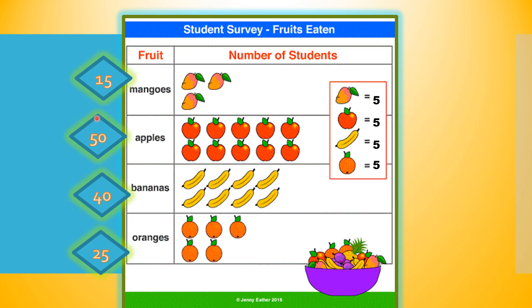Which group of fruits is liked second best by this group of students? We know that 50 is the greatest number, so now we are considering which group has the second biggest number — the number that would come second if we are ordering from greatest to least. If you said the bananas, you are absolutely, positively correct. The bananas are the second favorite fruits of this group of students.